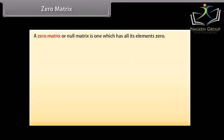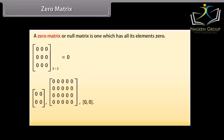Zero matrix: A zero matrix or null matrix is one which has all its elements zero. Here is a 3 by 3 zero matrix. These are three more examples of zero matrix. The zero matrix is denoted by zero.